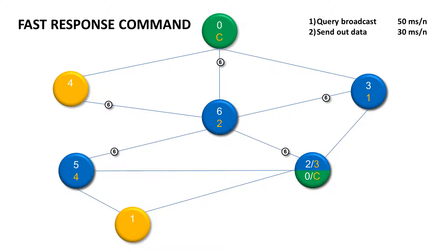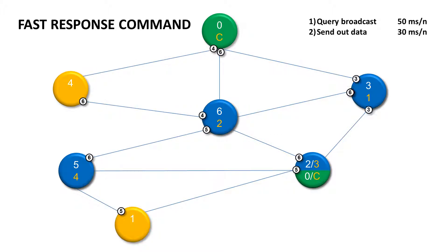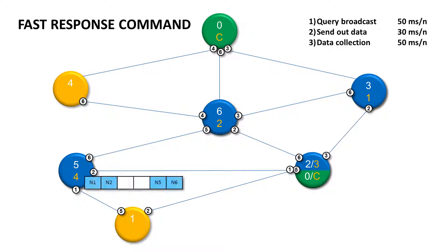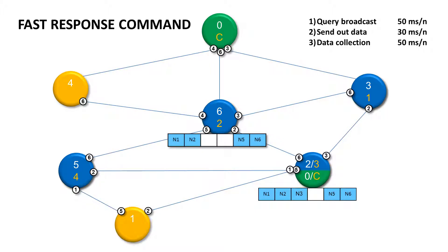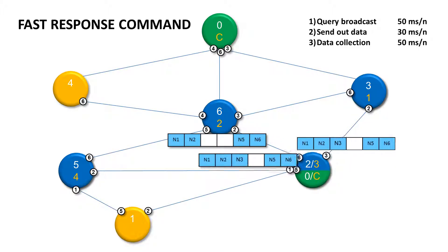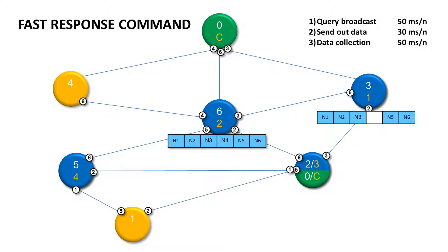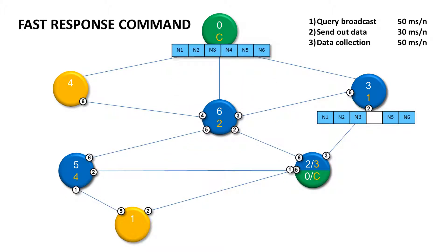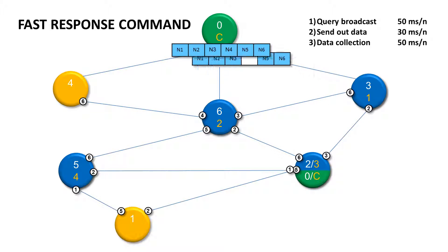To get data from the nodes that are not routers and to have the process more robust, in the second phase every node sends its data to all neighbors. This takes 40 milliseconds per node. In the third phase the last router creates a packet and fills it with all data it has available — in our case data of nodes 1, 2, 5, and 6. The last router sends the packet out. Node 2 adds data of node 3 and forwards the packet in its time slot. Node 6 adds data for node 4 and transmits the packet as well. In this way we receive data from all nodes, and you can count on 50 milliseconds per each router.